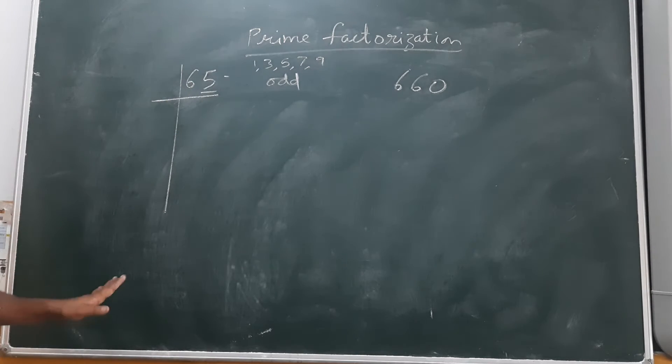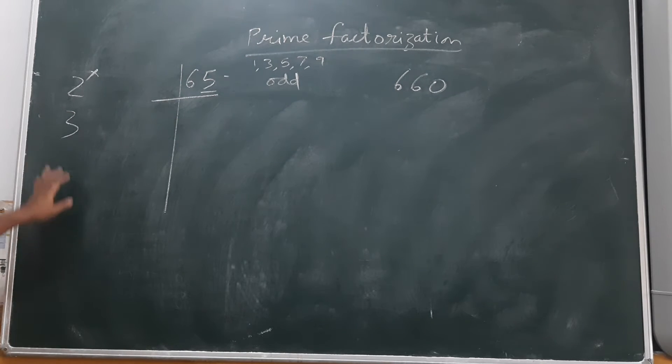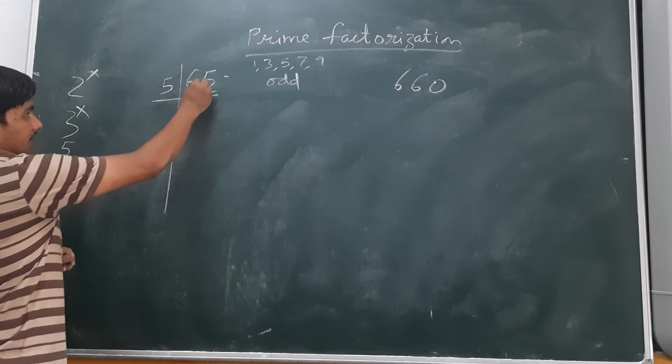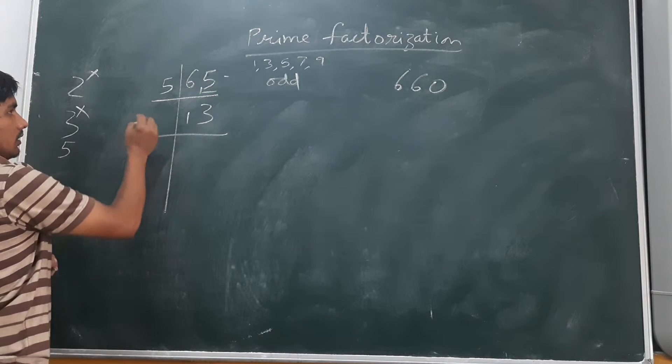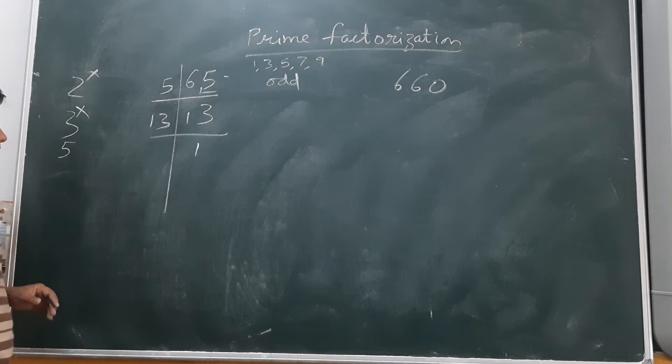So odd numbers are not divisible by 2, so we can't take 2. When we see 3, sum of digits is 6 plus 5 is 11, so it is not divisible by 3 also. By 5, because it is ending with 5, 5 times 13. Now 13 is a prime number.